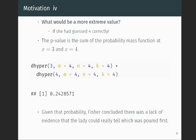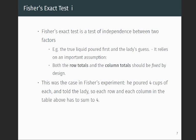And so this was the beginning of what we now call Fisher's Exact Test. And Fisher's Exact Test is a test of independence between two factors or two categorical variables. In this example that we looked at, the two categorical variables are, one, the true liquid poured first, whether it's milk or tea. And the second factor is the lady's guess.